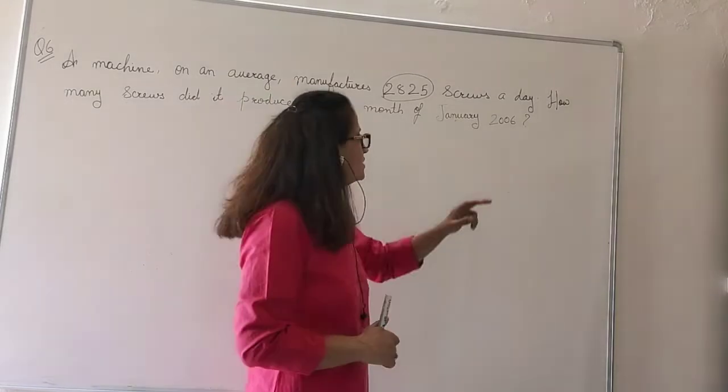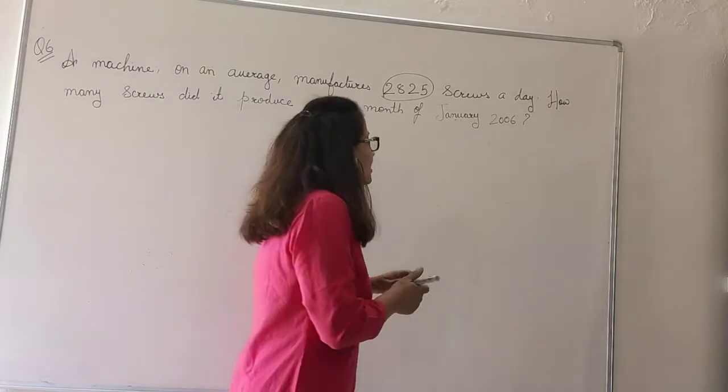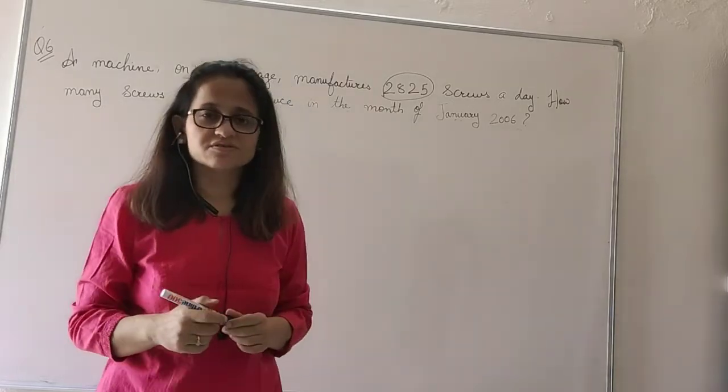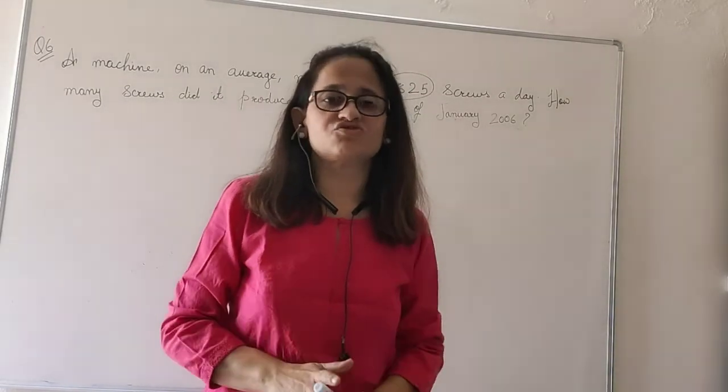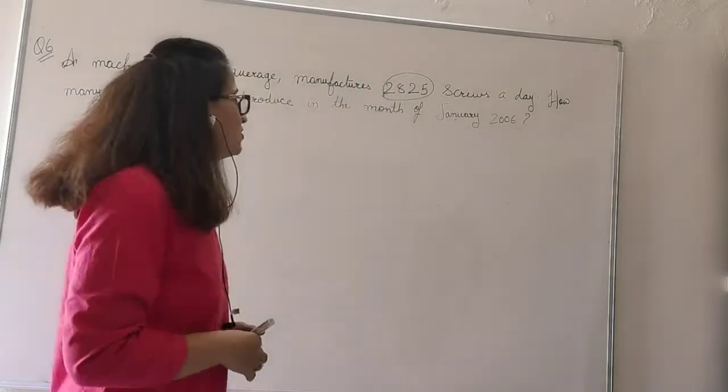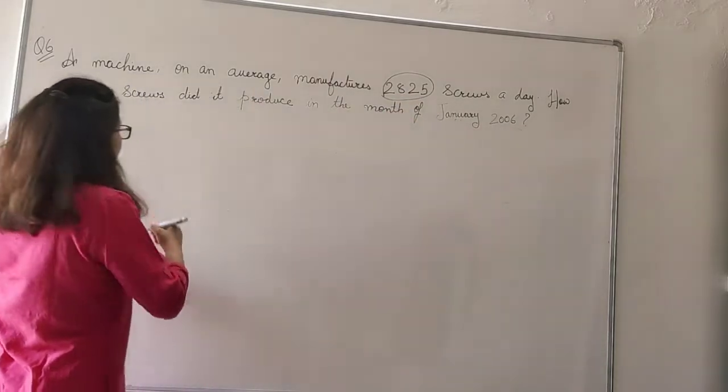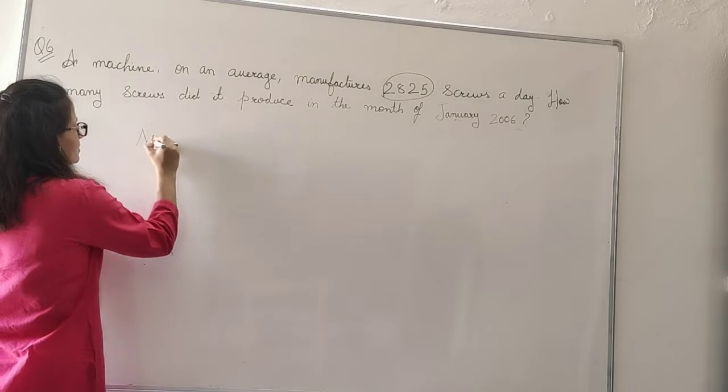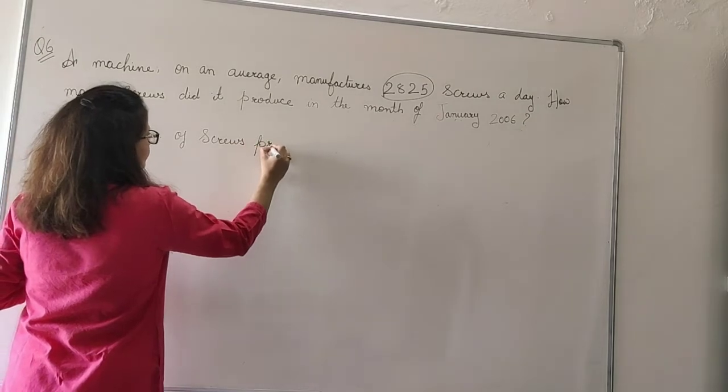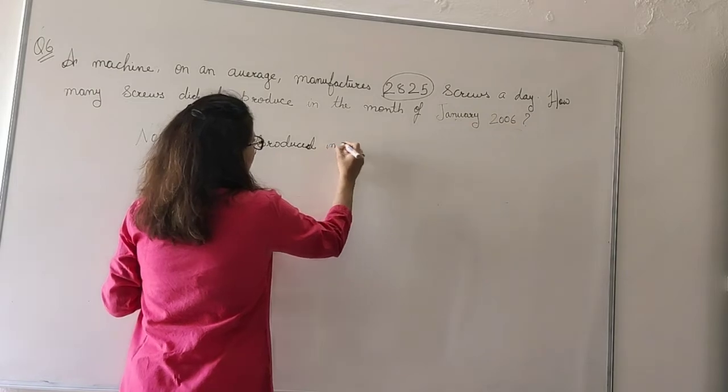But here the question is very simple: we have to find the number of screws produced in January 2006. It is very obvious that every year the month of January has 31 days, so we will directly multiply the number of screws produced in a day with 31.